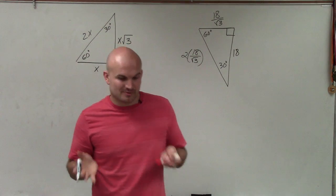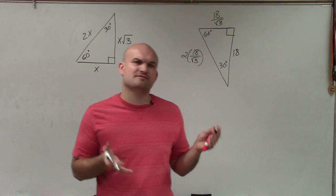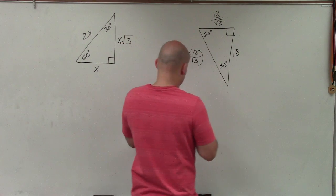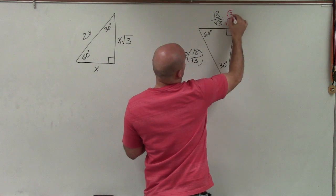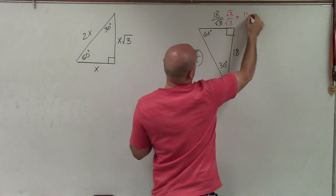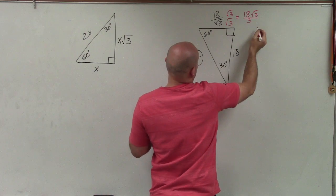Now, we can simplify this. We want to rationalize it down. We don't want to leave the square root of 3 in the denominator. So to do that, all I'm simply going to do is multiply by the square root of 3 in the denominator and in the numerator. And therefore, what I obtain is 18 square root of 3 divided by 3.